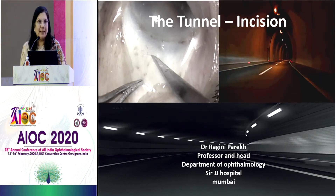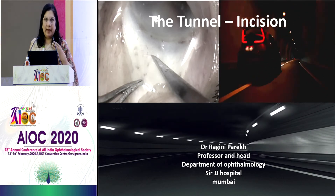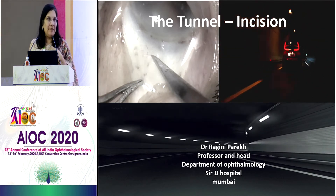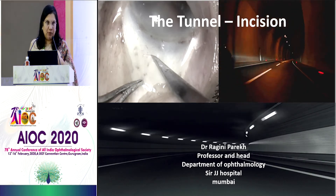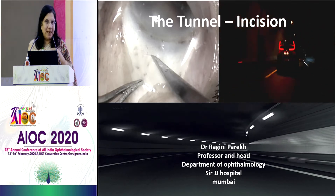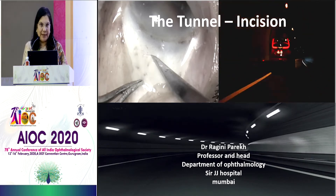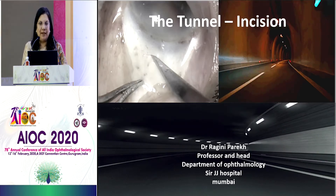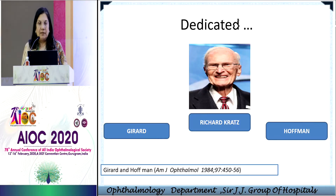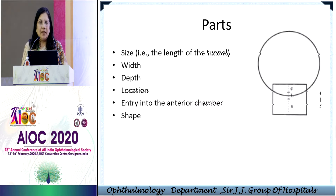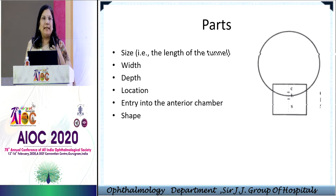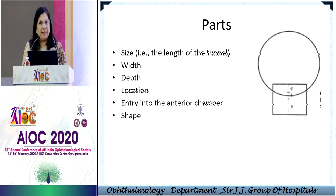I'll be speaking on this basic thing, but what we want is our mind says that we want an incision as small as FACO. We want astigmatism as less as FACO, but we have to do SICS because of the cataracts that we see every day. So the tunnel is very, very important. The parts of the tunnel are the size, the width, the depth, the location, the entry, and the shape. Every single part is extremely important to give good results.